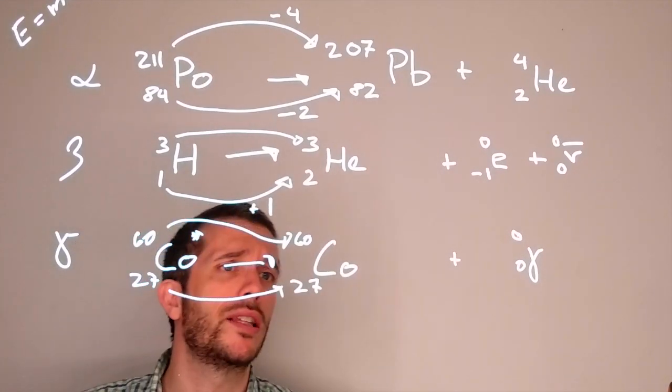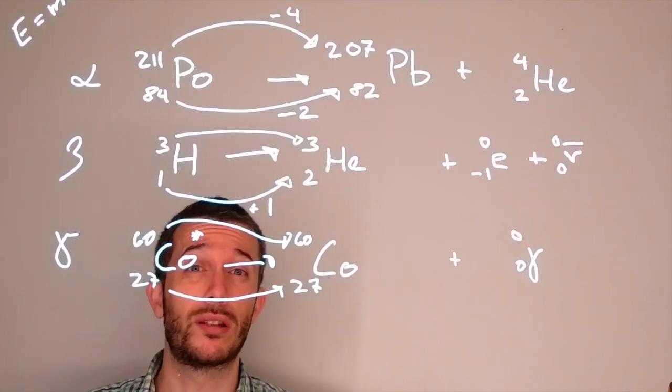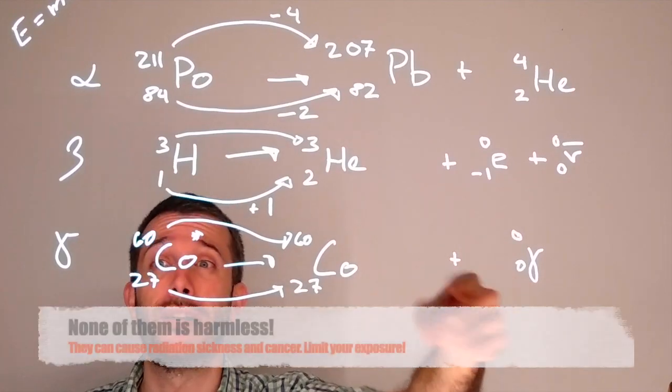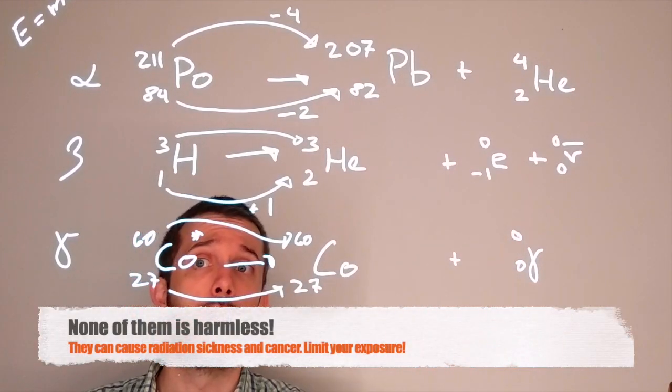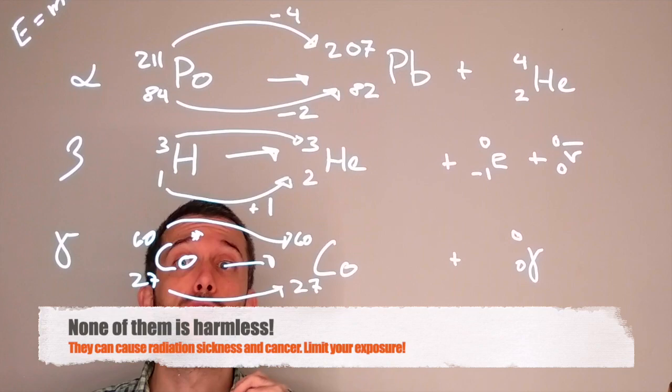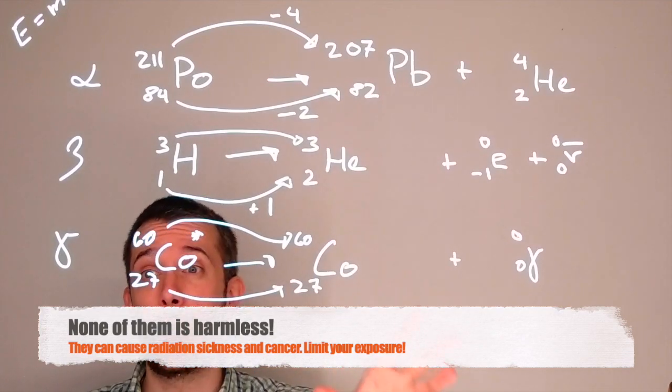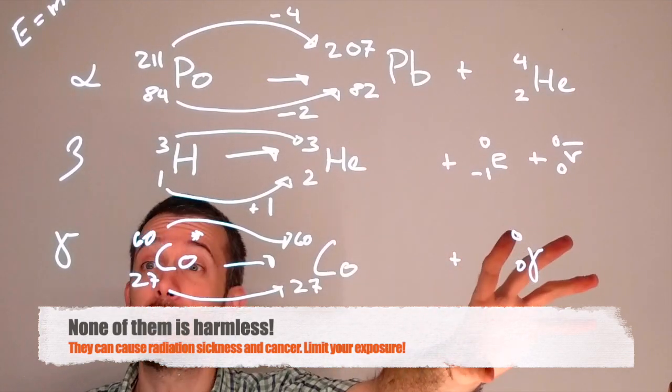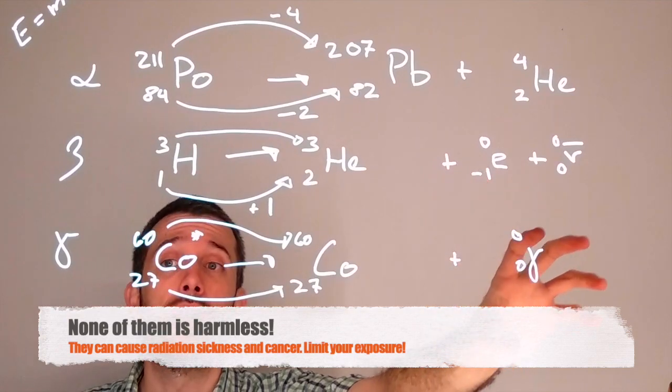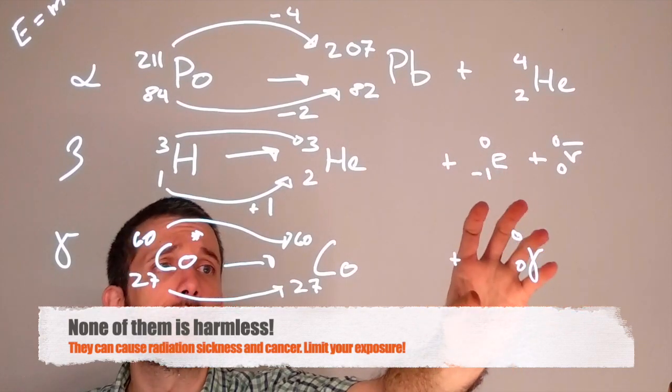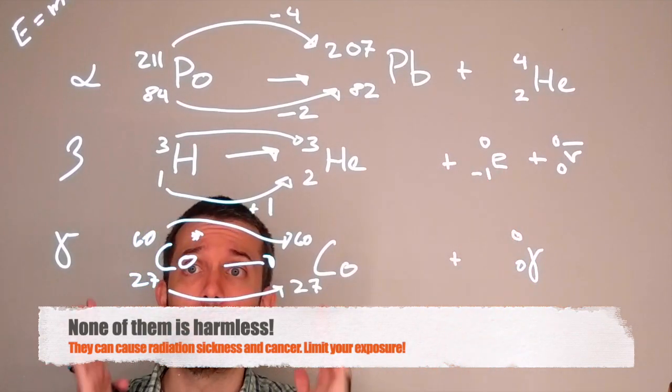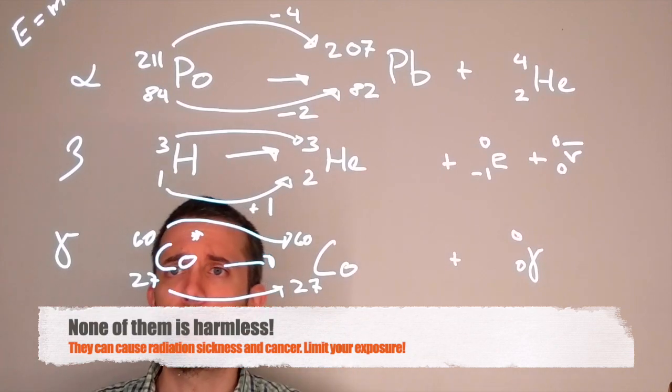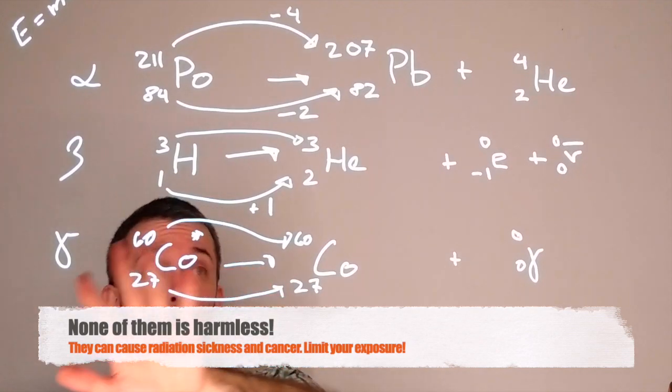Now, gamma radiation, the last of those three, also doesn't cause so much damage. The particle is very small and goes basically through you without much interaction. So the damage is very small. But the problem is, to block it, it's very complicated. You will need a very thick wall of concrete or you need a very thick piece of lead to block your gamma radiation.